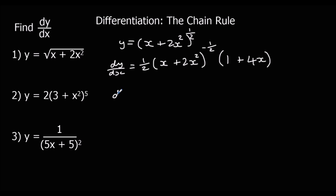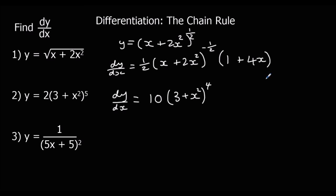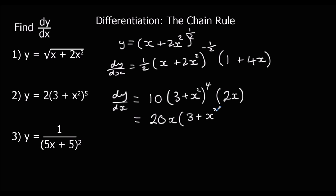The second one: we're going to differentiate around the bracket, so multiply by the power — 2 times 5 are 10. We leave the bracket and take one off the power, so 5 take away one is 4. Now we multiply by the bracket differentiated, which is 2x. We can simplify this: 10 times 2x gives 20x on the front, and we leave the bracket as it is.